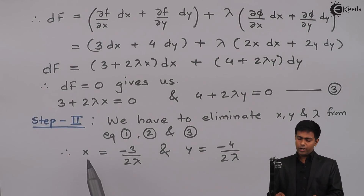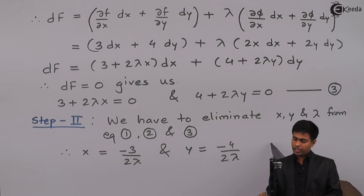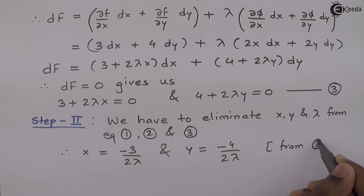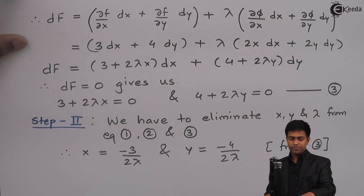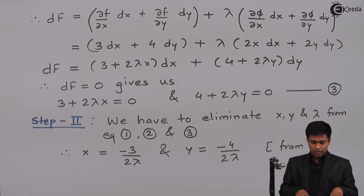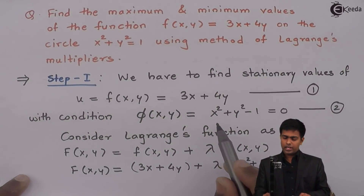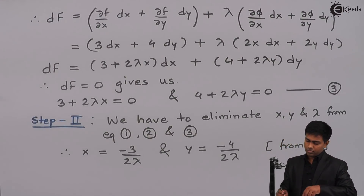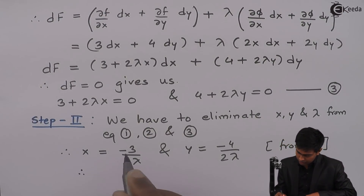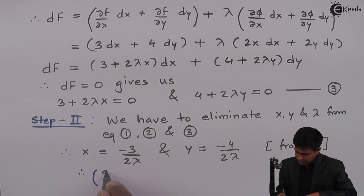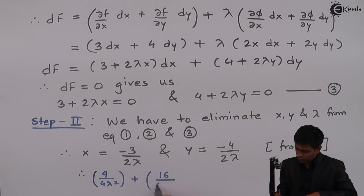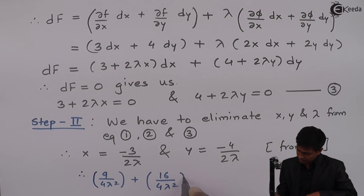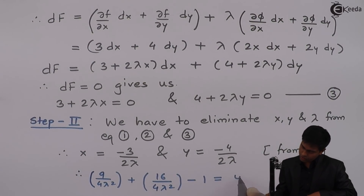From equation number 3, we get x = -3/(2λ) and y = -4/(2λ). Substituting these values into equation number 2, which is x² + y² - 1 = 0, we get 9/(4λ²) + 16/(4λ²) - 1 = 0.